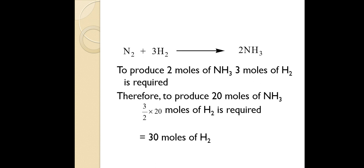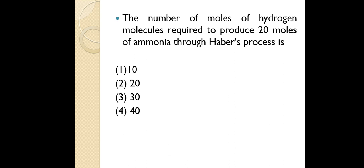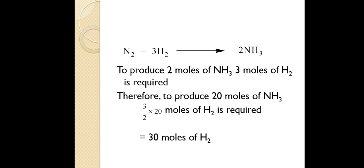Since 2 moles of ammonia require 3 moles of hydrogen, to produce 20 moles of ammonia we use the unitary method: (3/2) × 20 = 30 moles of hydrogen. That is option 3. To solve this type of problem your mole concept must be very clear, so please watch the video on mole concept I have uploaded.